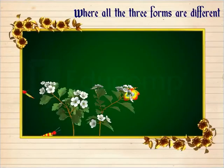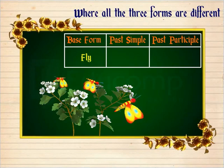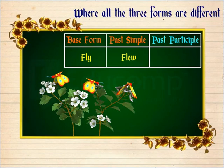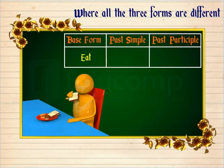Where all the three forms are different: an example is the verb 'fly.' The past simple form is 'flew' and the past participle form is 'flown.' Another example is the verb 'eat.' The past simple form is 'ate' and the past participle form is 'eaten.'